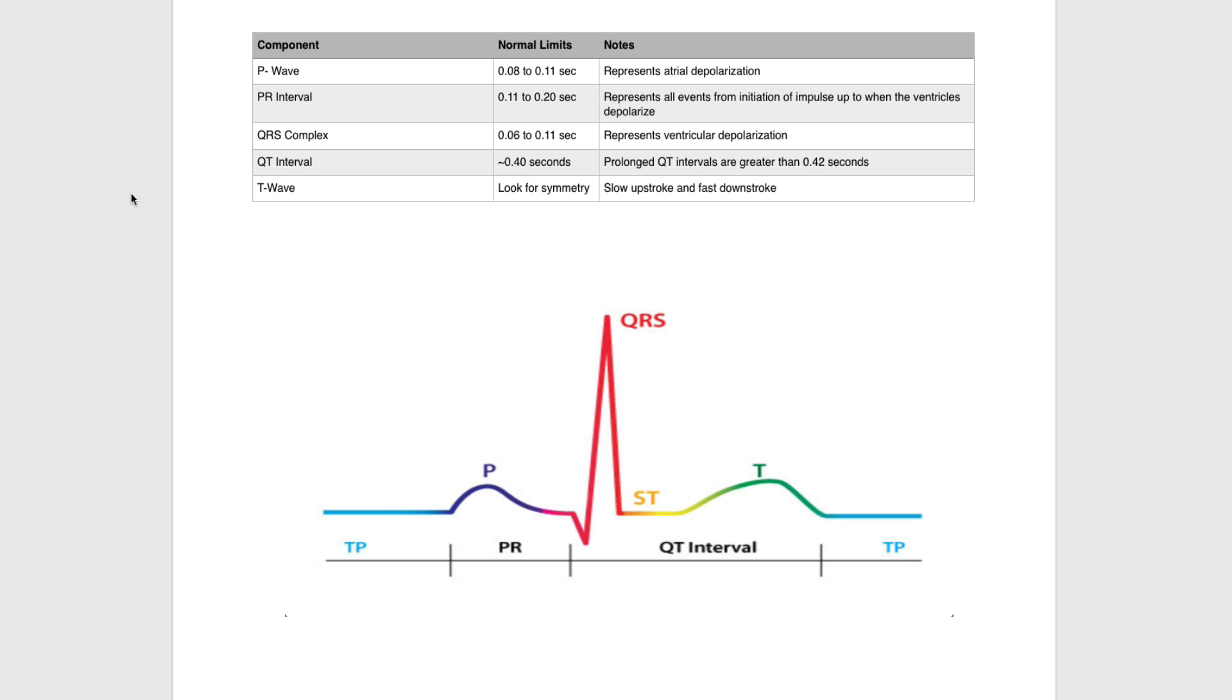Knowing the acceptable limits of each of the five major components of an ECG beat is crucial to interpreting what may be wrong with the heart. Let's get started by examining each component and its acceptable limit.